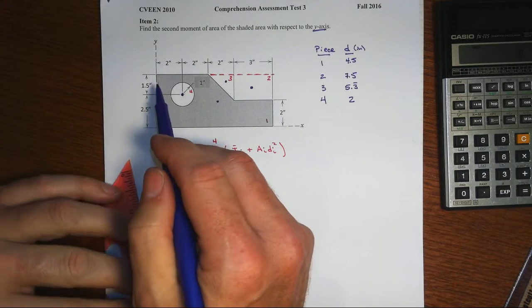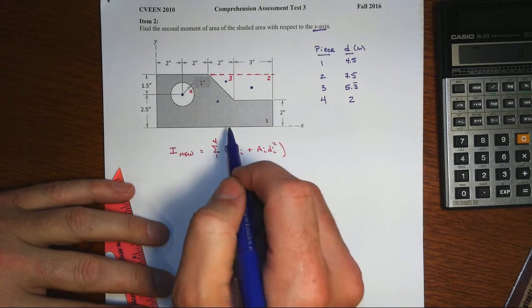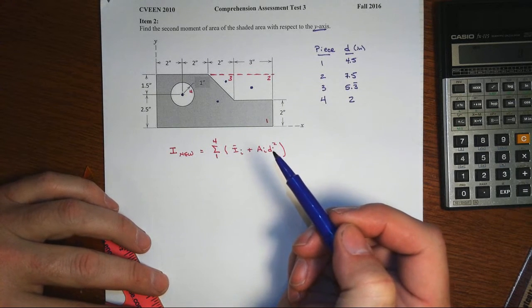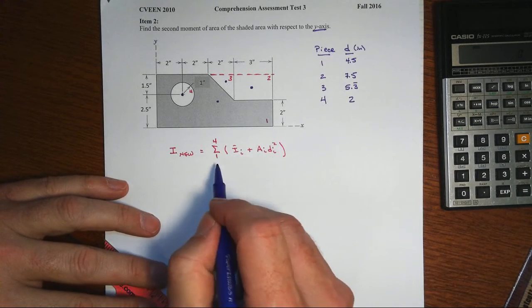Note that we have a shape that is composed of several geometric shapes of which we already know the formulas for second moments of area. So rather than attempting to integrate, all we really need to do is this composite formulation.